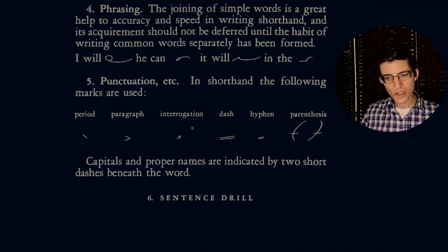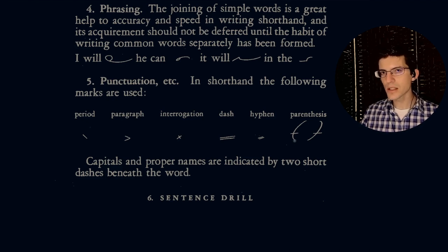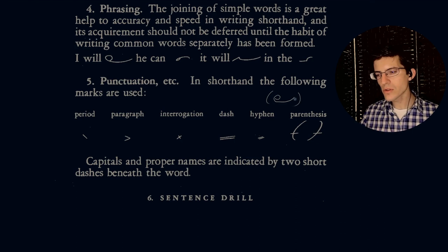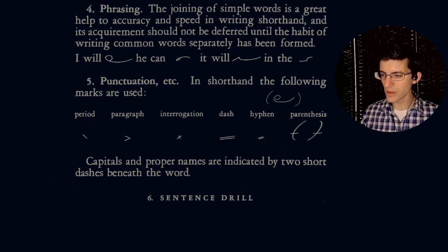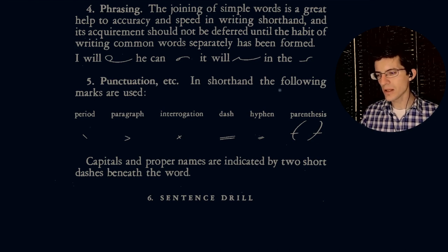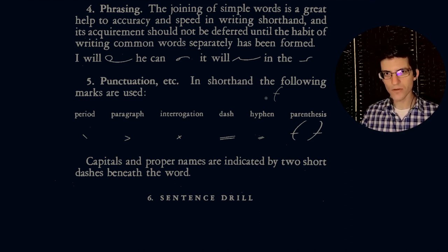We have paragraph. Interrogation is just an X. Dash is two lines. Hyphen is two short strokes. And then a parenthesis. The reason why they have a downward stroke and then a line through it is because if you just did a downward stroke for the parenthesis, those two strokes, the parenthetical braces are actually strokes in shorthand. So this stroke here on the left-hand side could be a B or a P. And the stroke on the right-hand side could be an F or a V. So in order to differentiate them, you simply have to do the stroke and then put a horizontal dash through the middle.